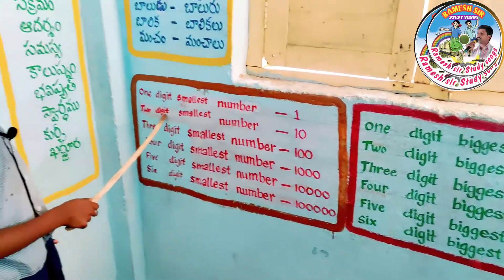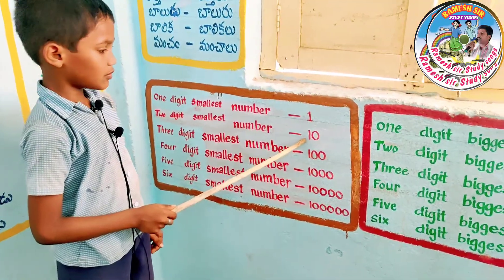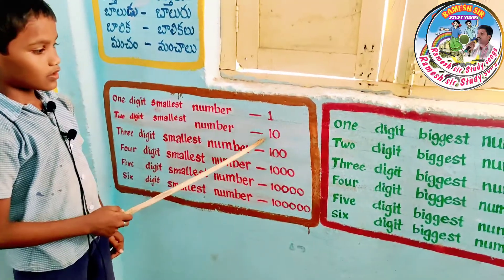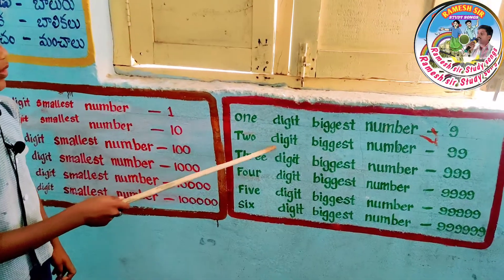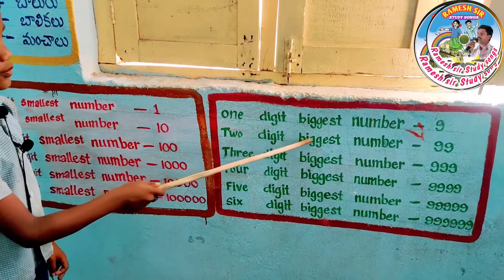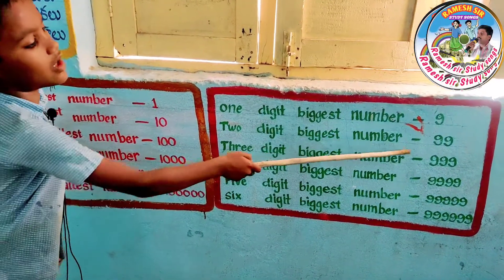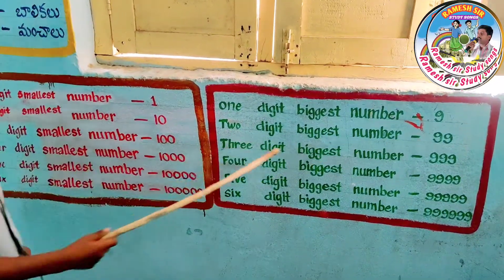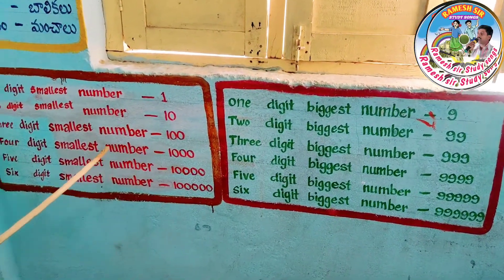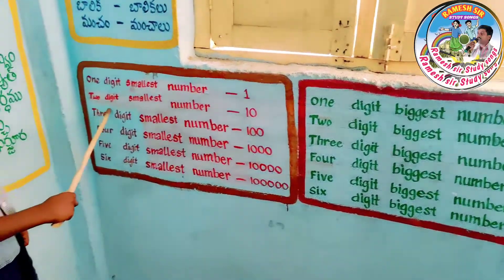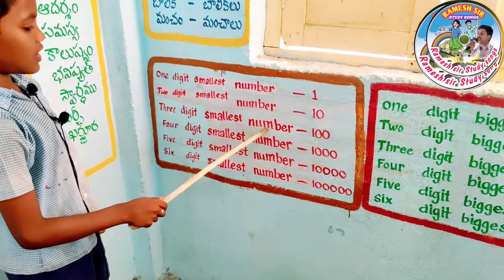Two digit smallest number: ten. Two digit biggest number: ninety-nine.